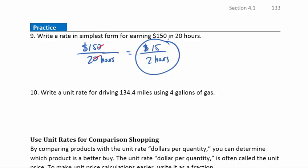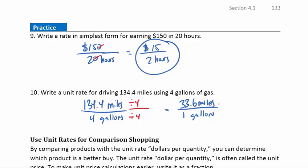Question 10. Write a unit rate for driving 134.4 miles using 4 gallons of gas. So 134.4 miles over 4 gallons. Now I'm headed for the unit rate here. 1 gallon is what I want. So I'm going to divide both the top and the bottom by 4. The denominator is easy. 4 divided by 4 is 1. That's why we're picking 4. In the numerator, that gives us 33.6 miles per gallon.